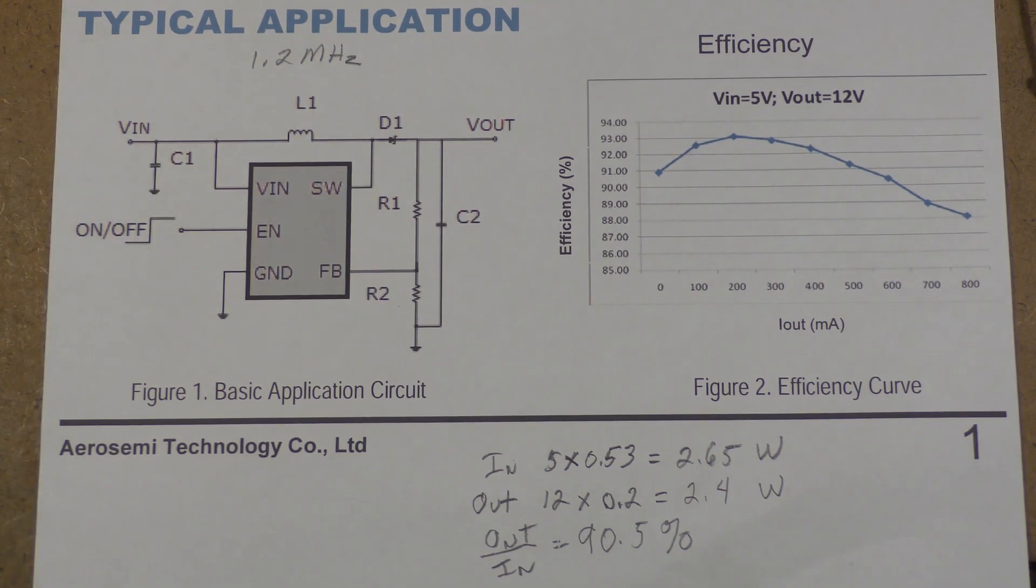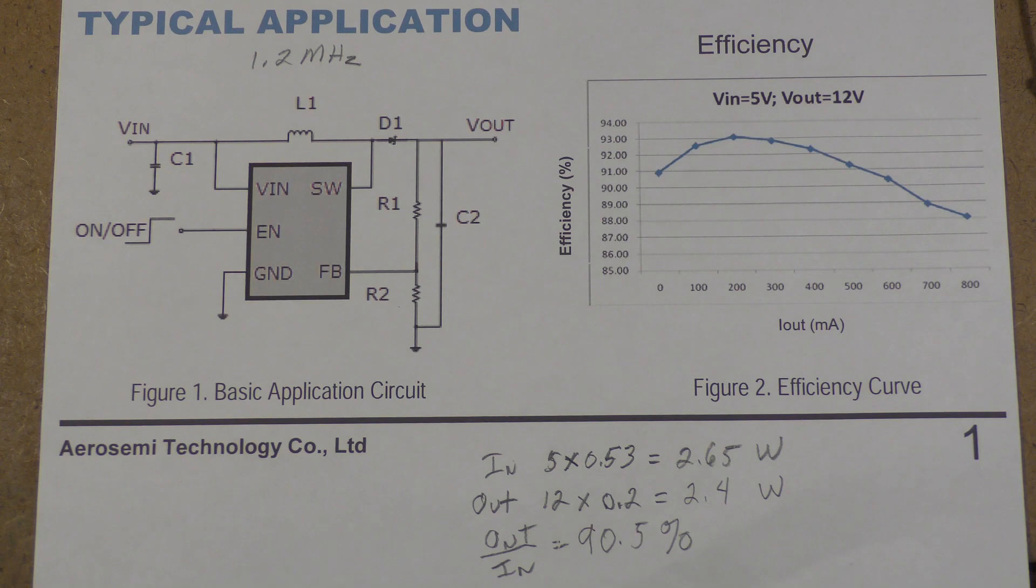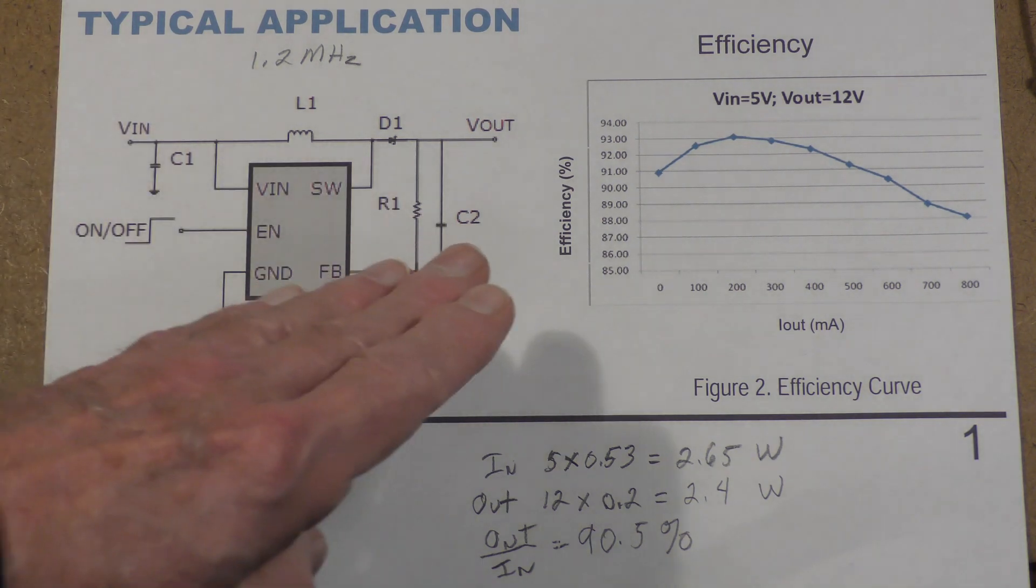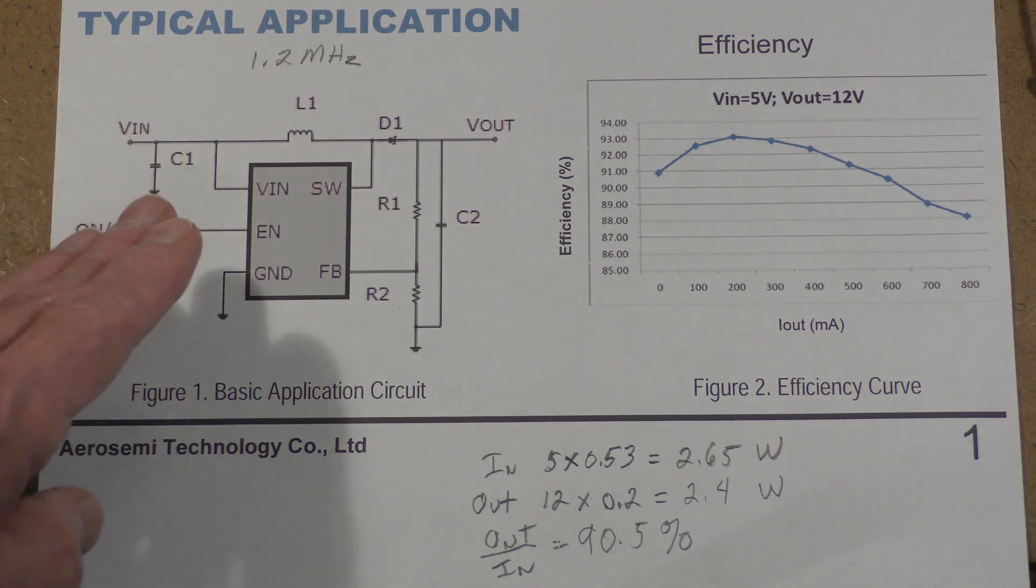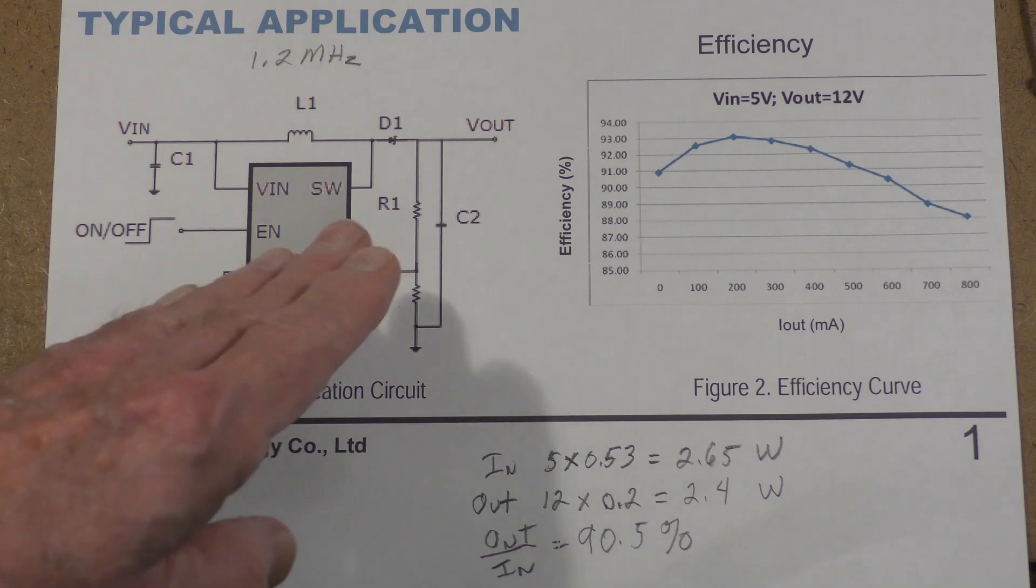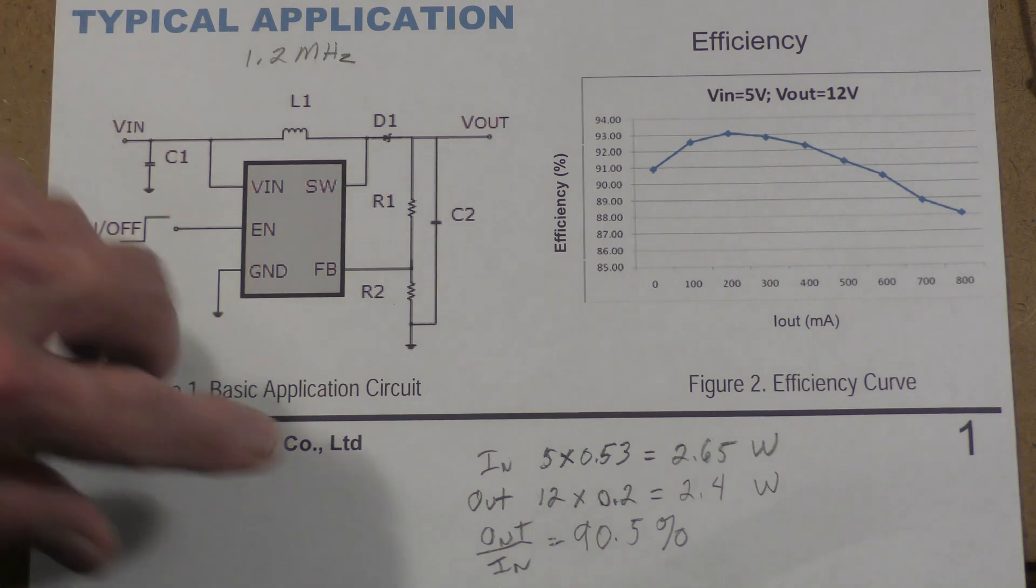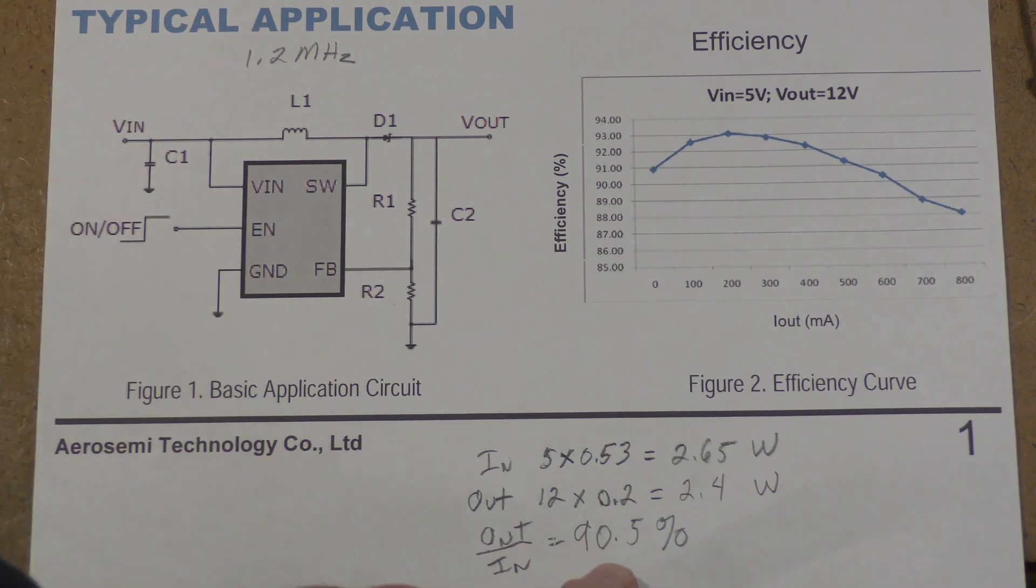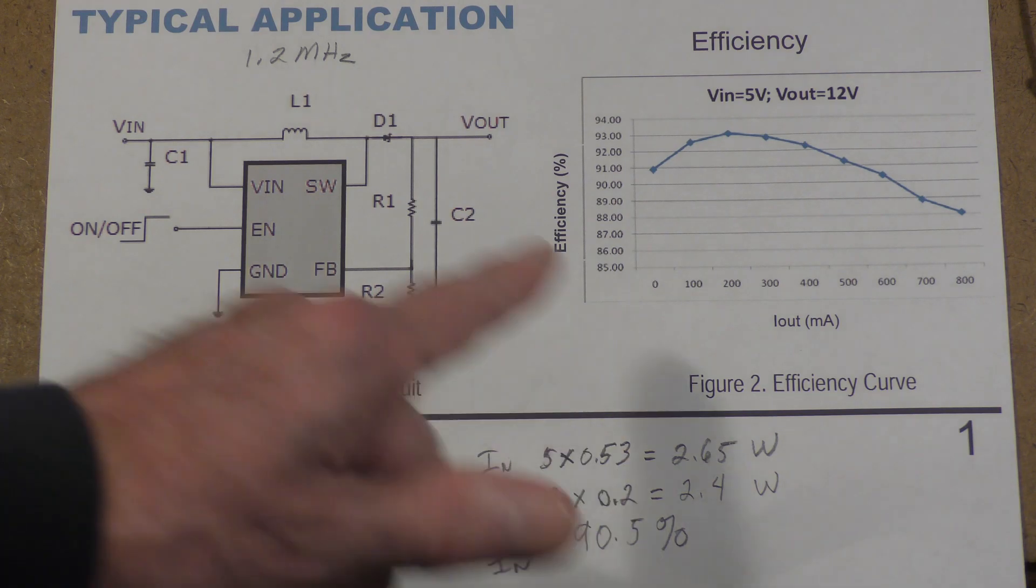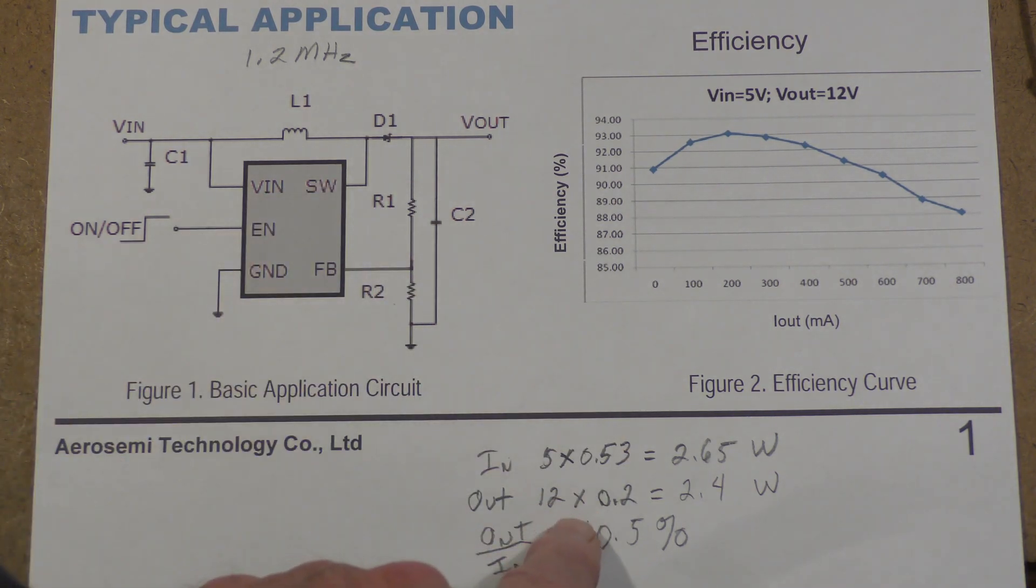So in summary, what we're talking about here is you can use concepts like power out equals power in times efficiency. So with the power in of 2.65 watts multiplied by an efficiency of 90.5 percent, we get the power out. Or in reverse, if you divide the power out by the power in, you get the efficiency.